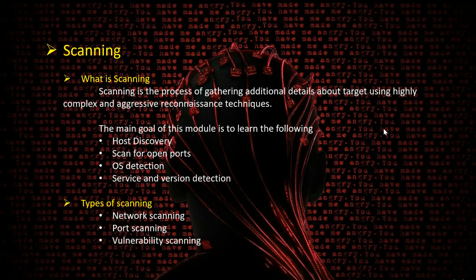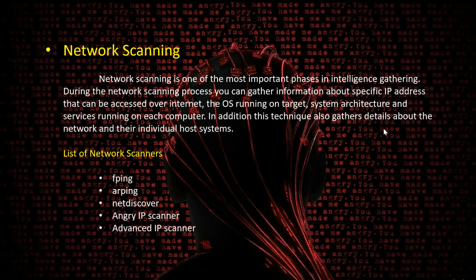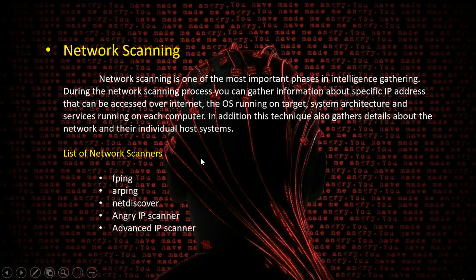There are mainly three types of scanning: network scanning, port scanning, and vulnerability scanning. Network scanning is one of the most important phases in intelligence gathering, where we target the system architecture, OS running on the target, services running on the system, and multiple connected hosts. Tools used for network scanning include fping, nping, netdiscover, Angry IP Scanner, and Advanced IP Scanner, most of which come pre-installed on Kali Linux.